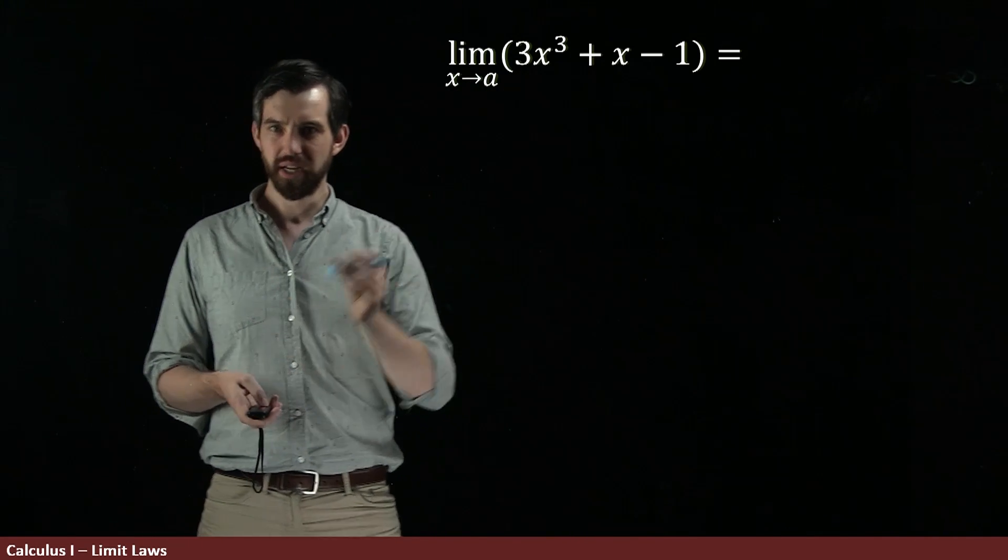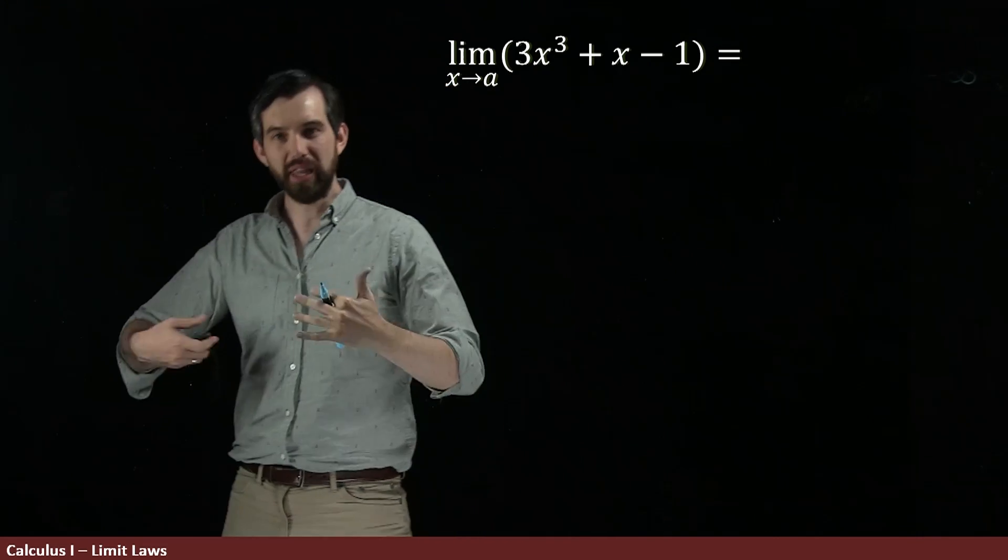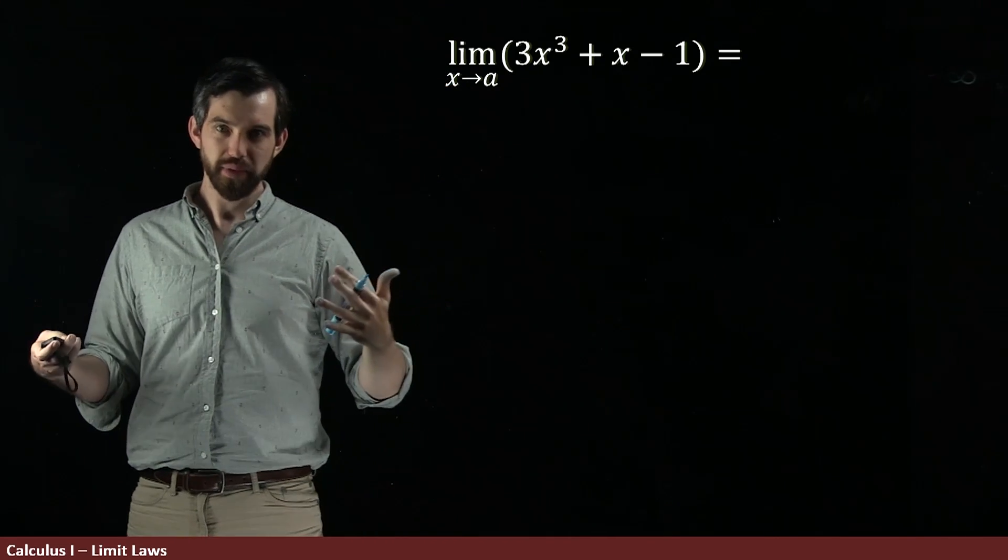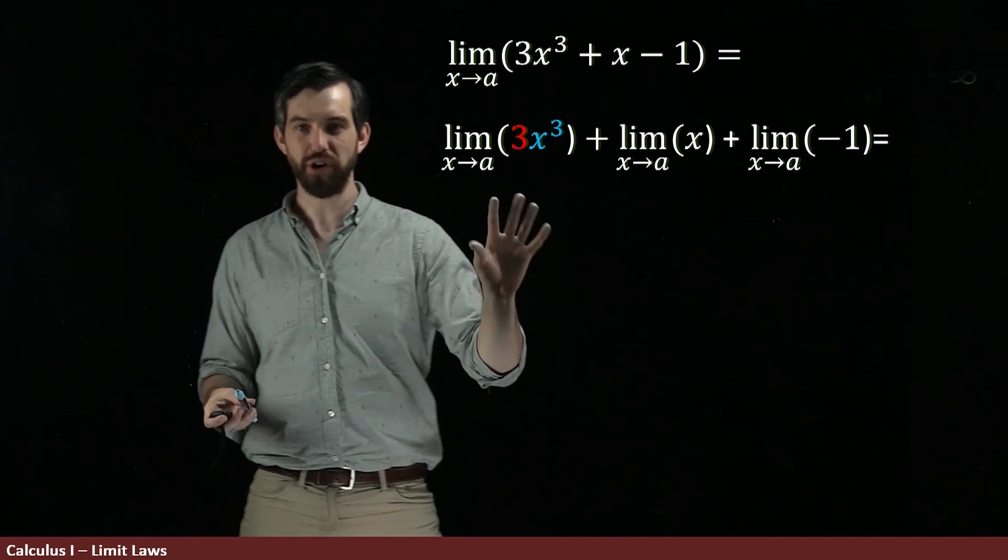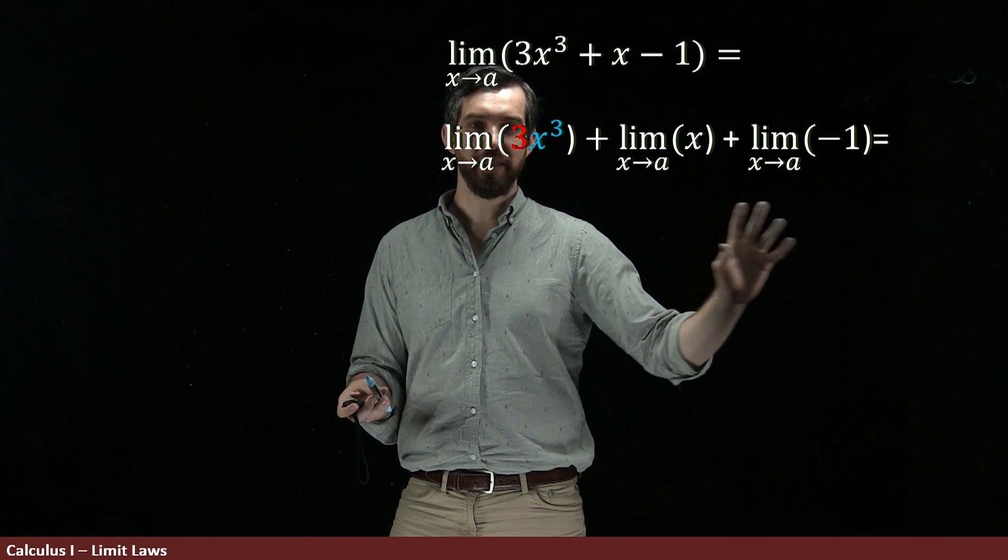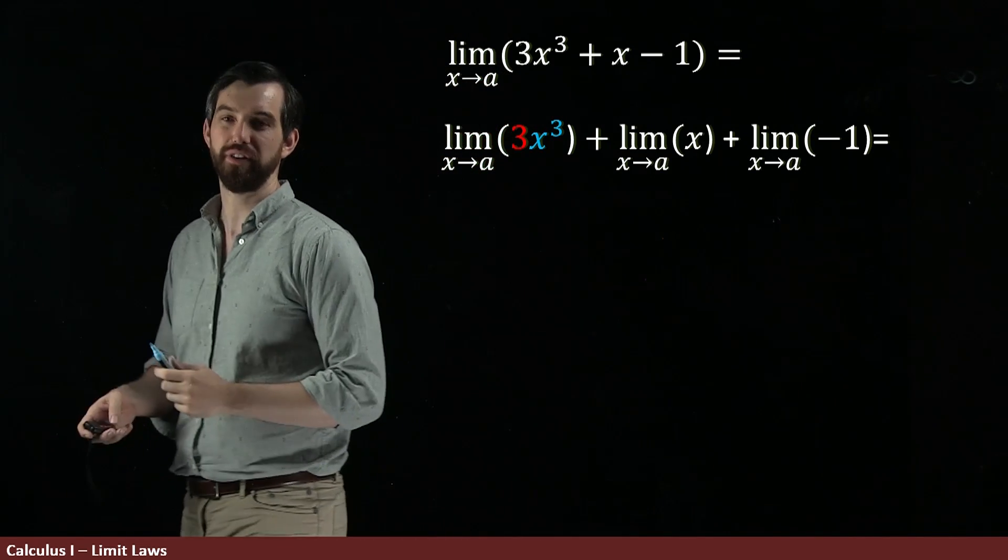The idea is, first, c was a sum of three different things, and we saw that the limit of a sum was the sum of the limits. So, I can break that up as the sum of three different things. The sum of this first 3x cubed, the sum of the x, and the sum of the minus 1. It's three different limits.